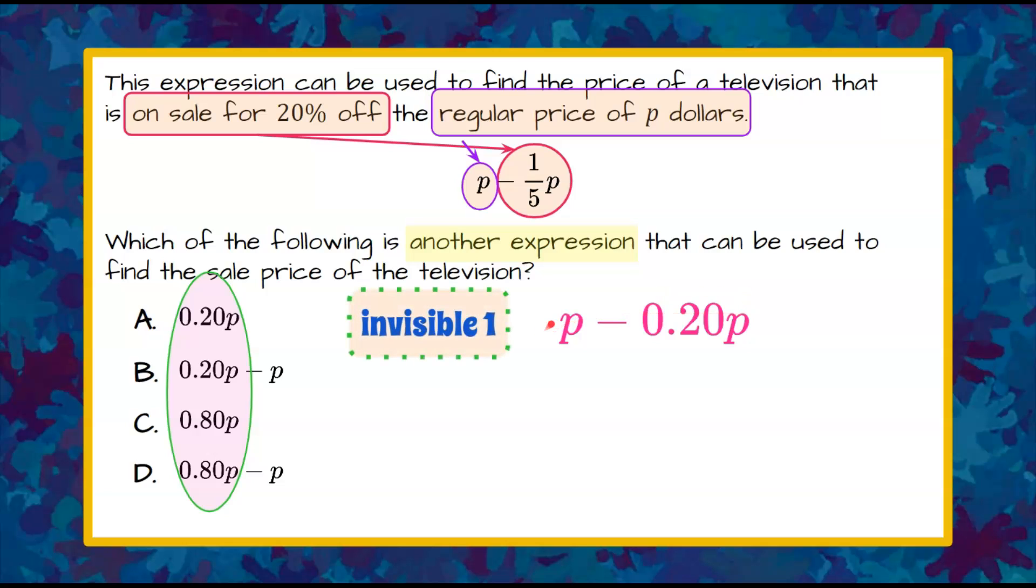Now we're going to understand that there's an invisible one in front of this variable P. That is actually 1P. And in algebra, we don't need to write the one in front of a variable. P is just 1P.